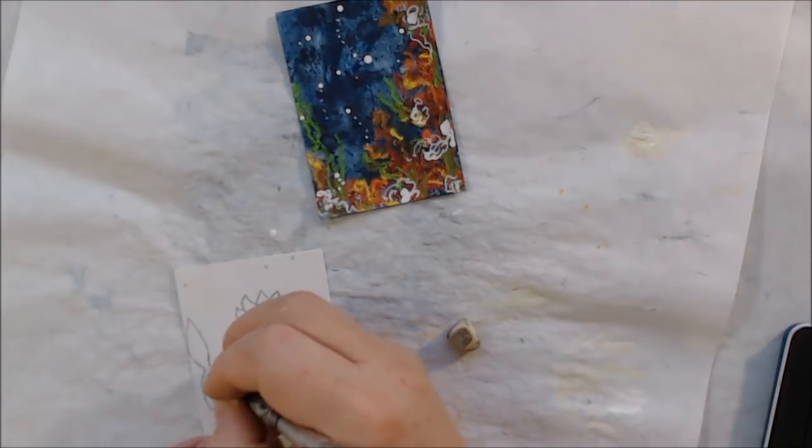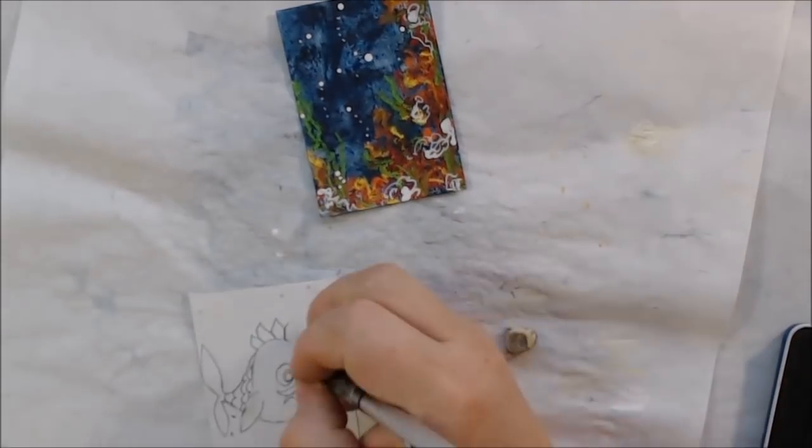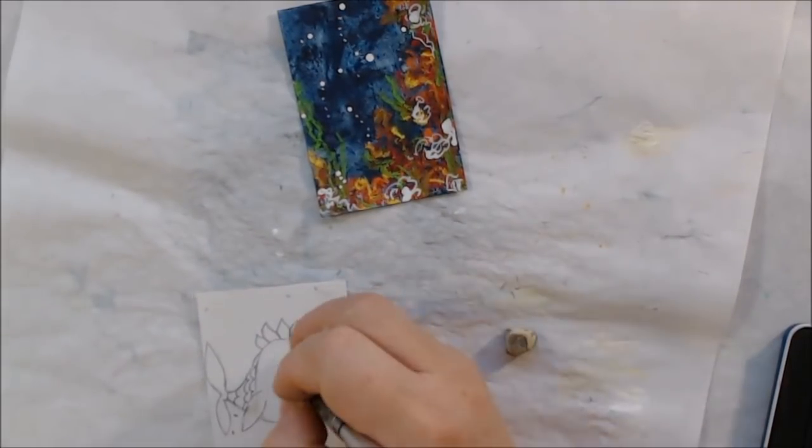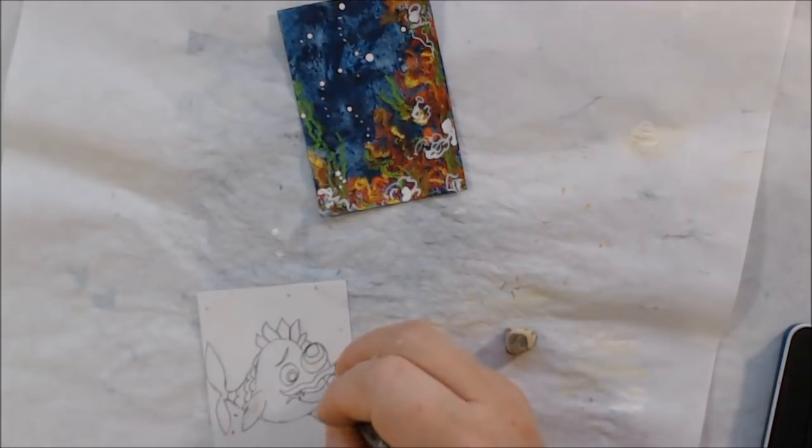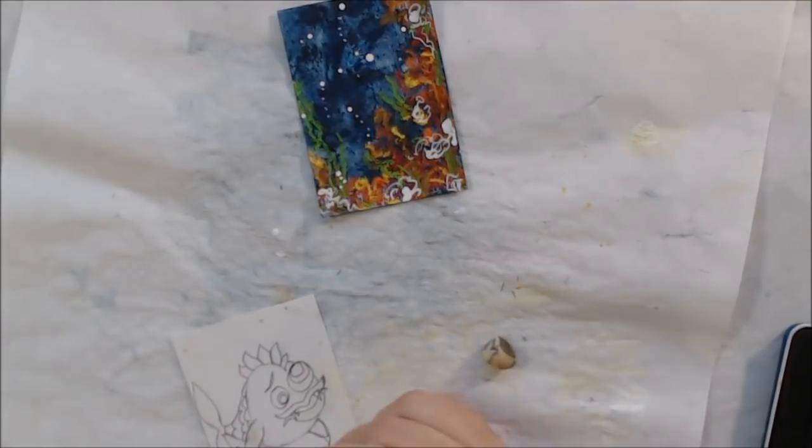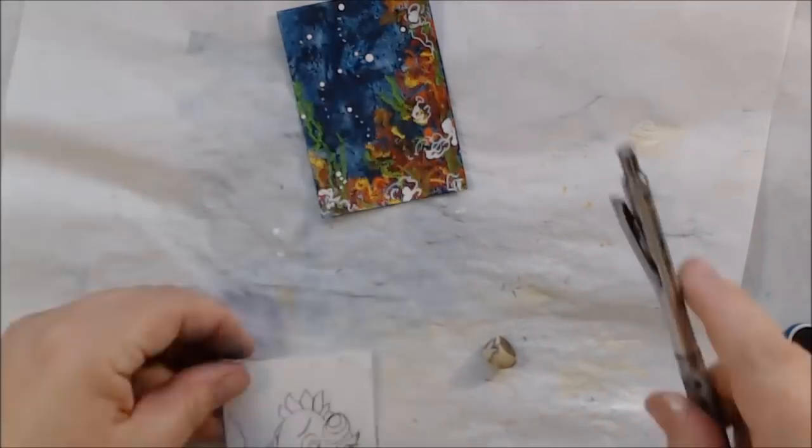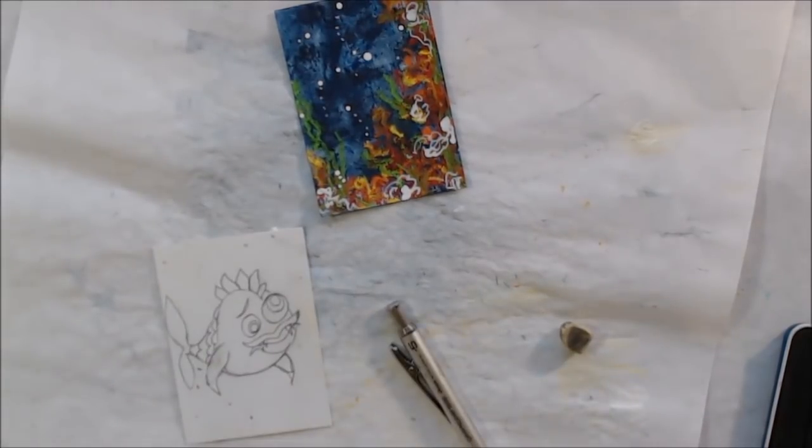This is another piece of that same confetti cardstock, and I'm using my mechanical pencil with 2B graphite in it to draw my crazy fish. Then I'm going to color it, but first I'm going to finish drawing it.